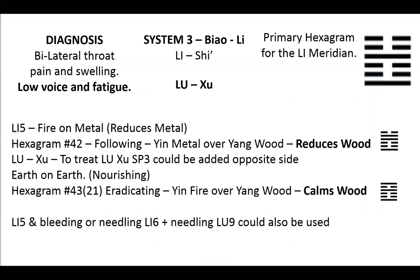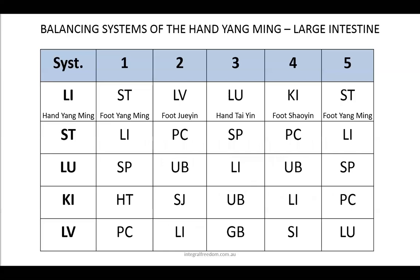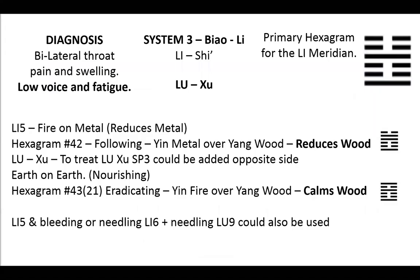If we add the symptoms of low voice and fatigue as a demonstration, they can be symptoms of a deficiency in the lung. Initially we looked at large intestine and stomach; now we're looking at large intestine and lung through its Bie relationship. Here there's the possibility of having an excess condition in the large intestine meridian and a deficiency condition in the lung.